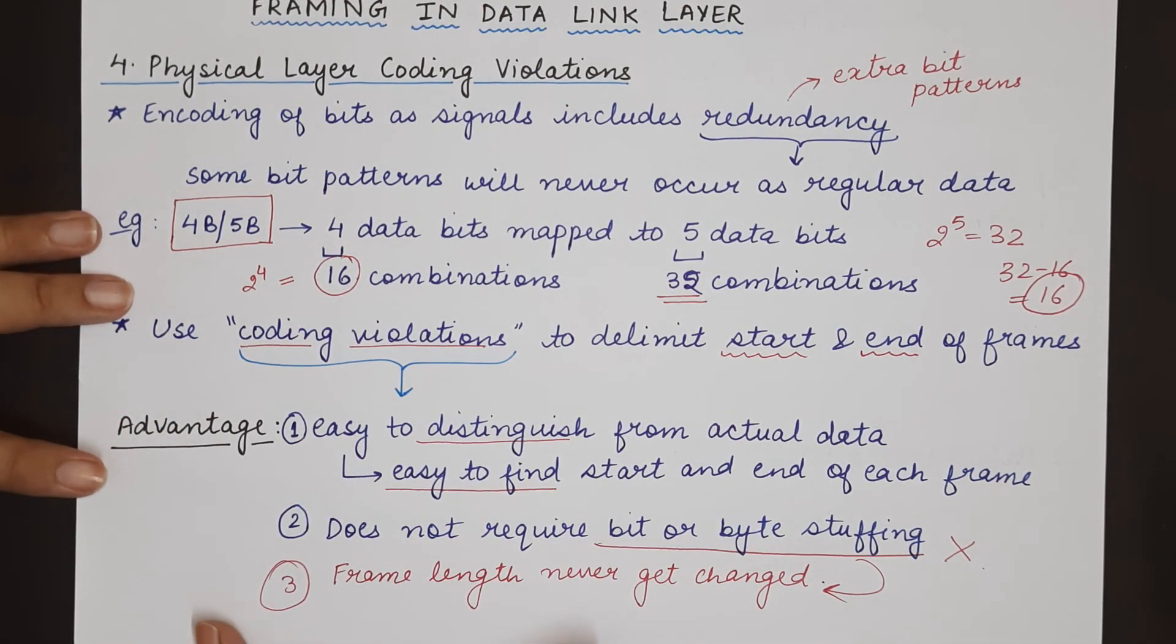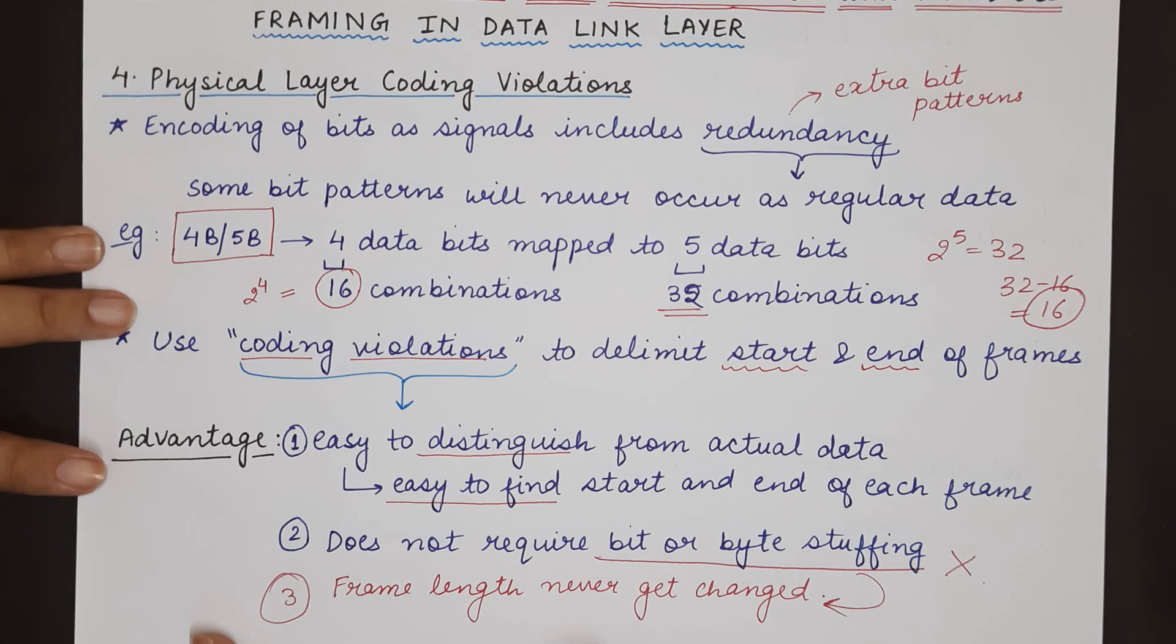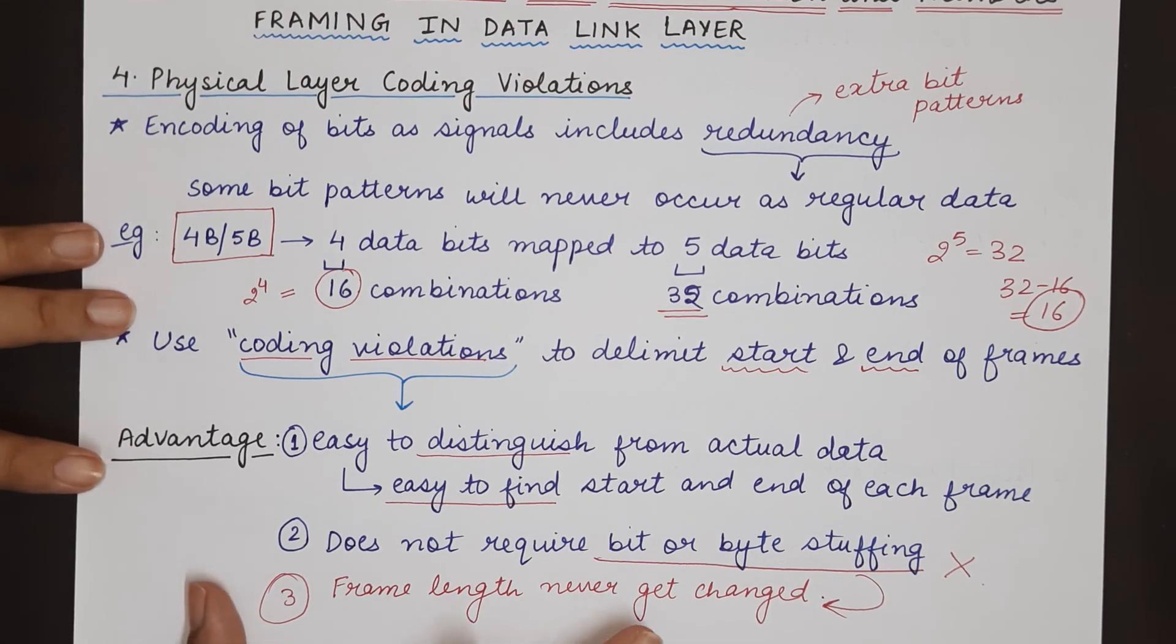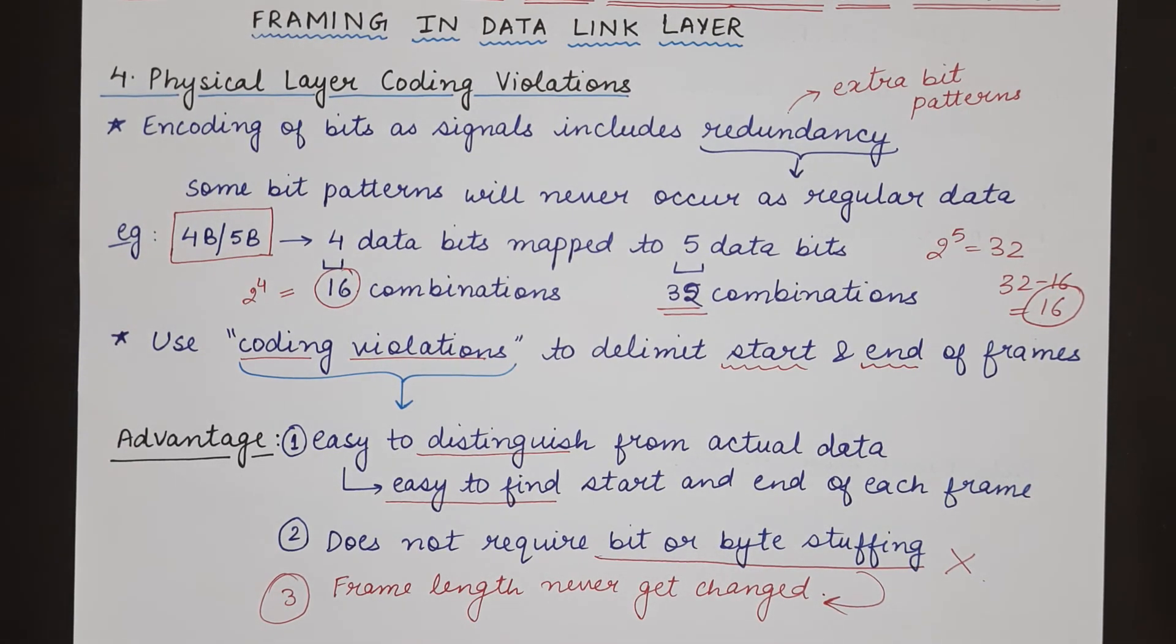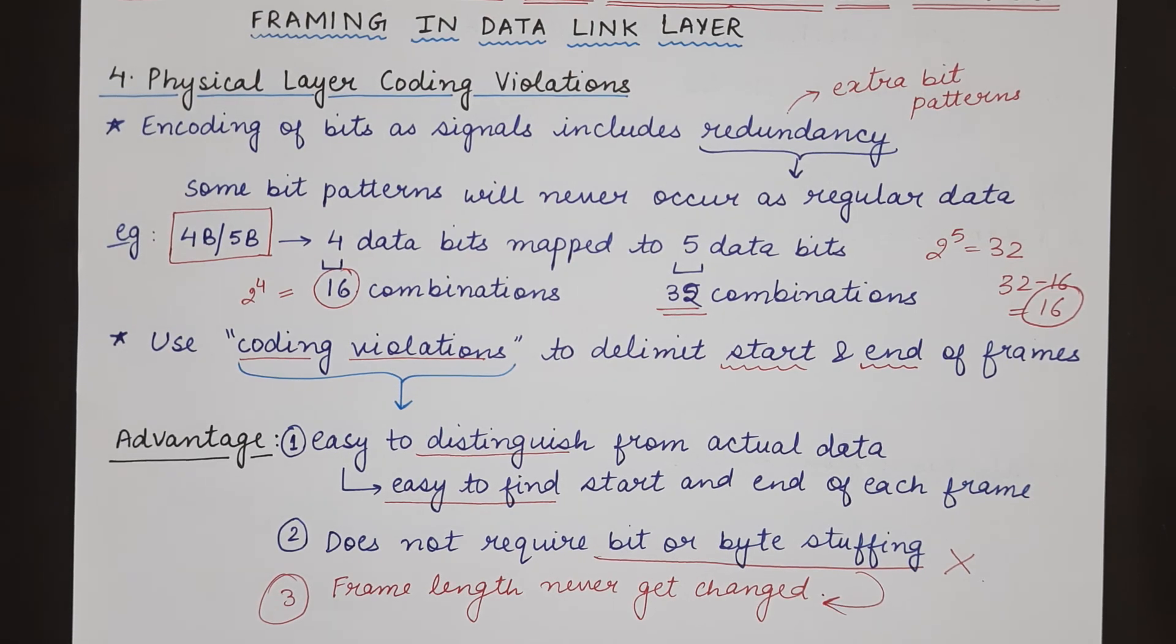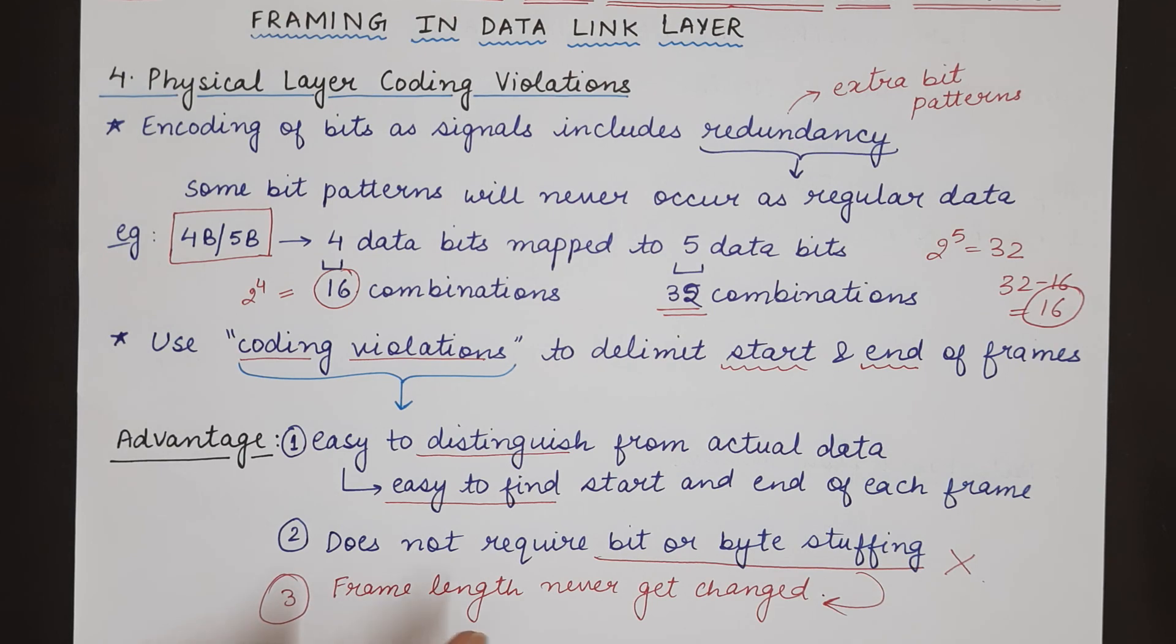So this was all about physical layer coding violations that can be used for framing at the data link layer. I hope you have understood this concept. Please let us know how you find this video and also let us know which other topics you would like to study from us. Thank you for watching till we meet in the next video. Mind your exam.